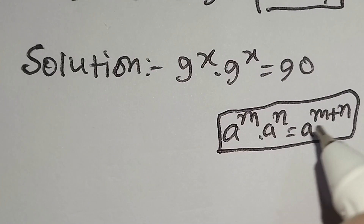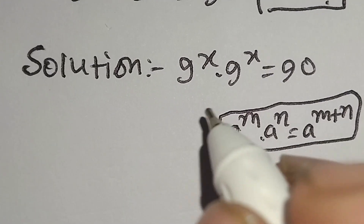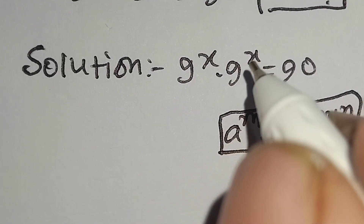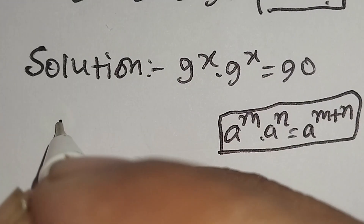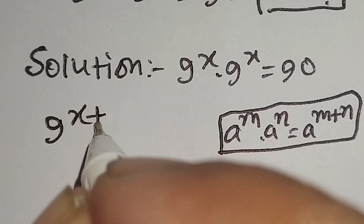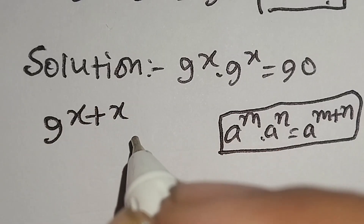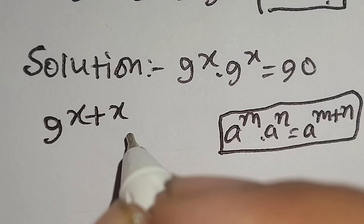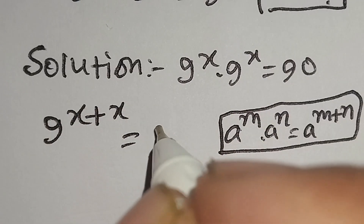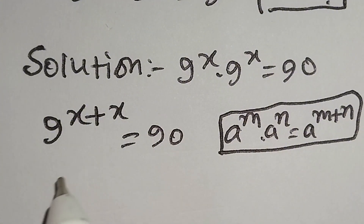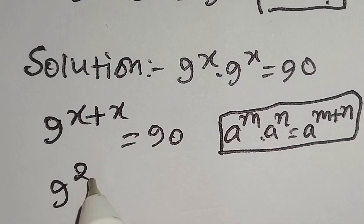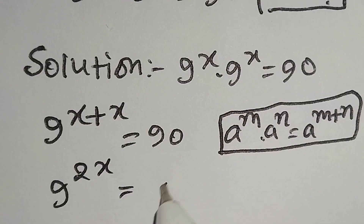According to this identity, we can write 9 to the power x times 9 to the power x as 9 to the power x plus x, which equals 90. So 9 to the power 2x is equal to 90.